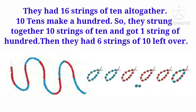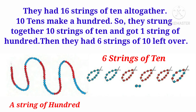10 tens make 100, so they strung together 10 strings of 10 and got a string of 100. Then they had 6 strings of 10 left over. Thus, on bringing together all their beads, they got a string of 100, 6 strings of 10, and 2 single beads.